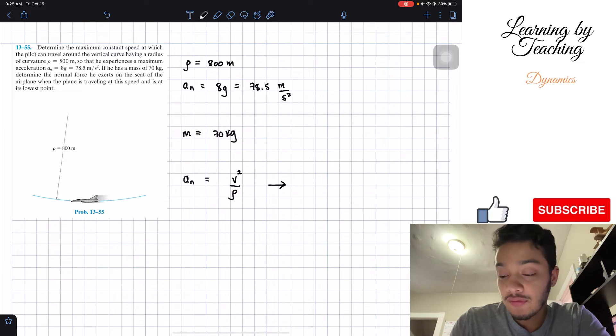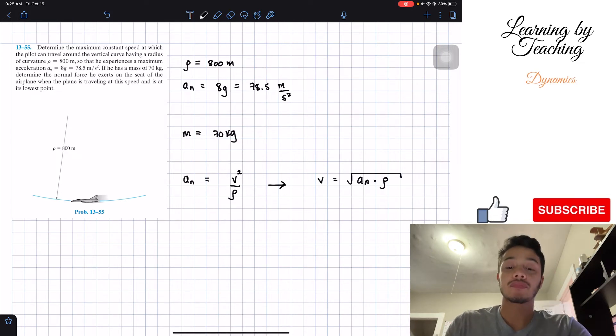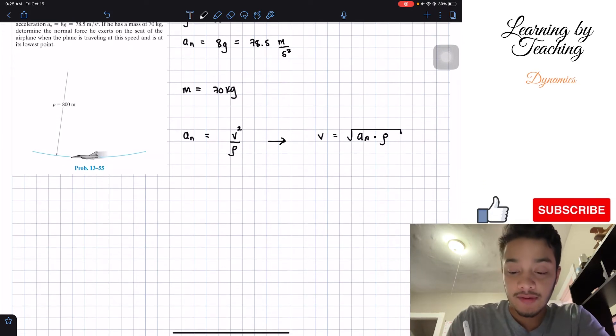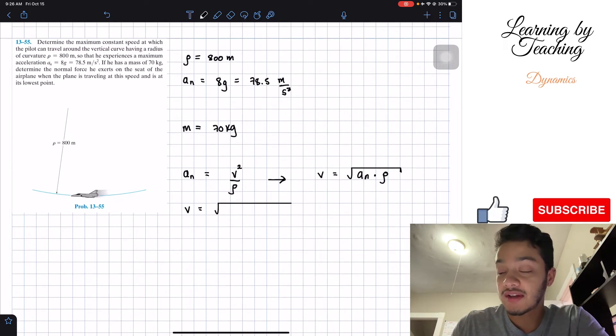If we solve for our velocity, we'll find out that our velocity is going to be equal to the square root of my acceleration multiplied by my radius of curvature. Now that we have our speed or velocity equation, what we can do is that we're going to plug in the values.